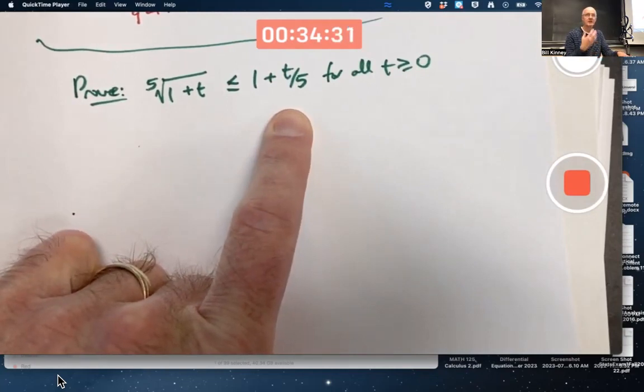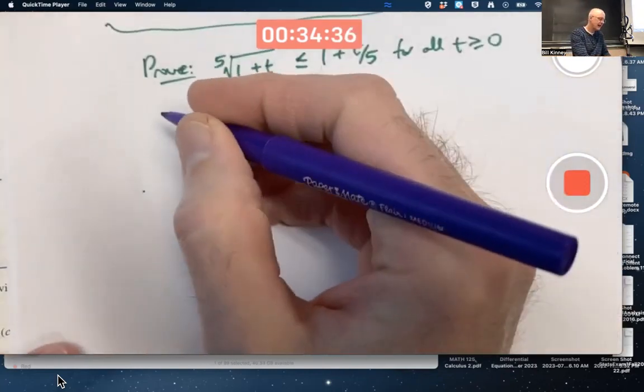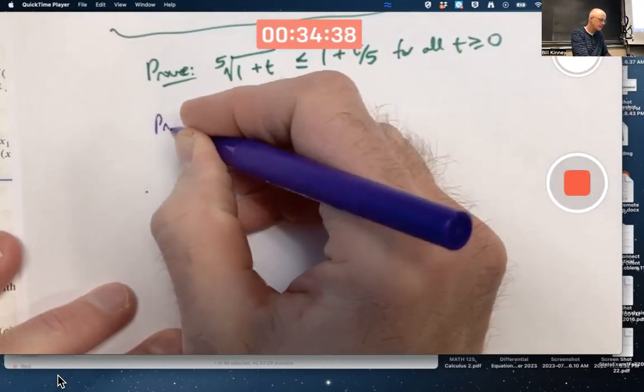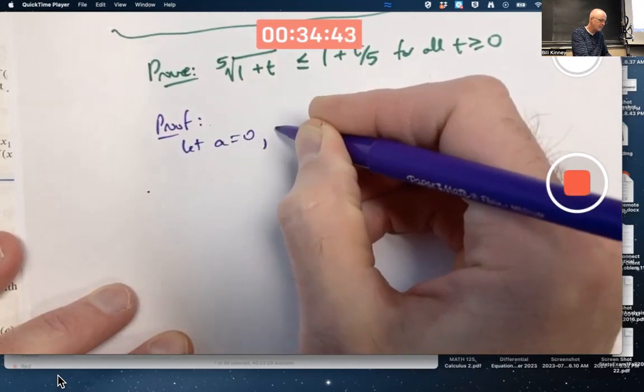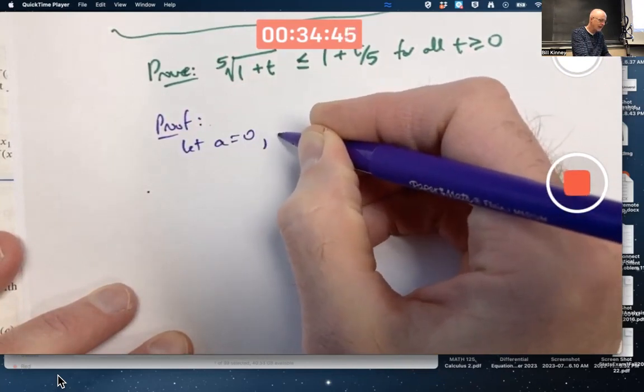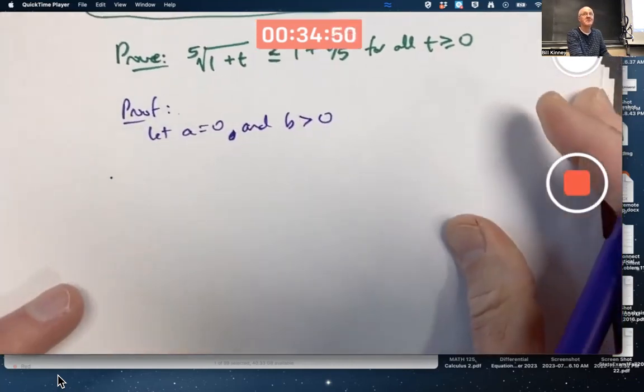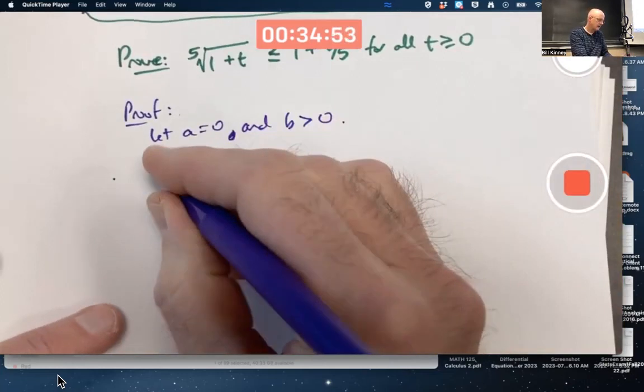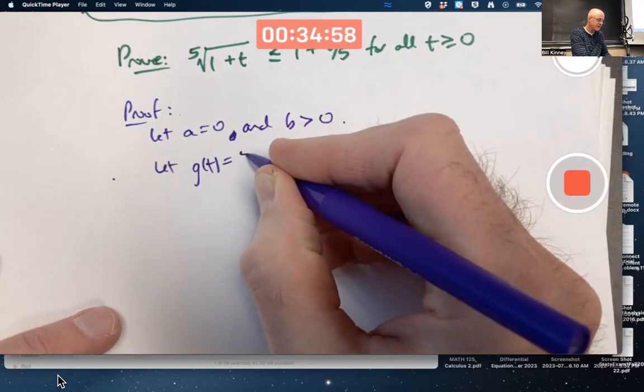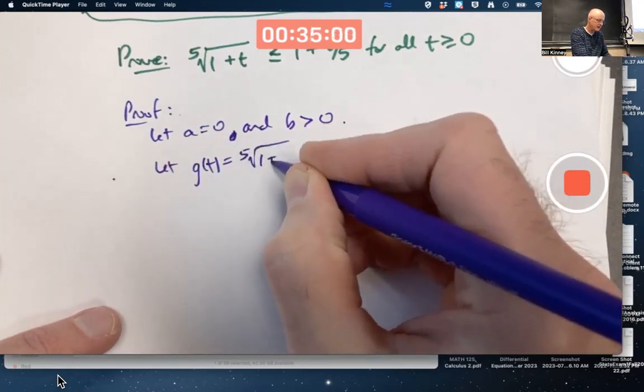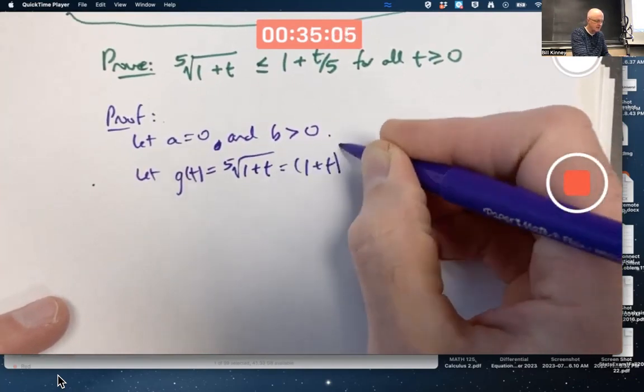But how do you prove this? Let a = 0 and b be some positive number, unspecified. Let g(t), the slower horse, be the fifth root function: fifth root of (1+t), which is the same as (1+t) to the one-fifth.